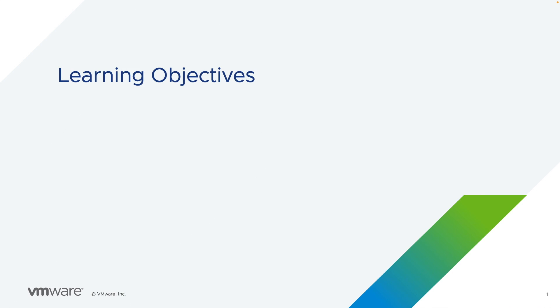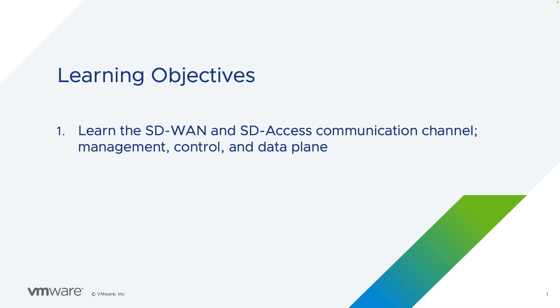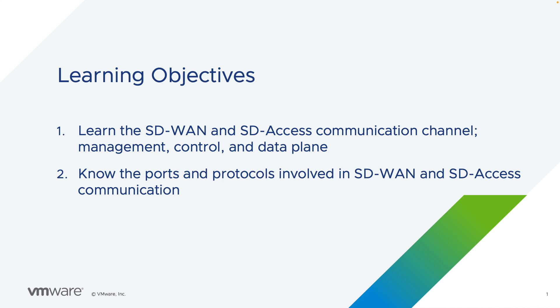In this video, we'll cover the communication between SD-WAN and SD-Access components. We will learn the difference between the communication channels for management, control, and data plane components for SD-WAN and SD-Access. We'll also get to know the ports and protocols involved, and lastly, we'll understand what happens in certain failure scenarios. It's important to understand this level of detail when implementing the solution in any network to help avoid communication being blocked by security components that may be in the path.